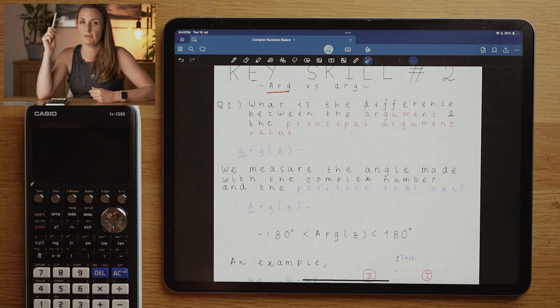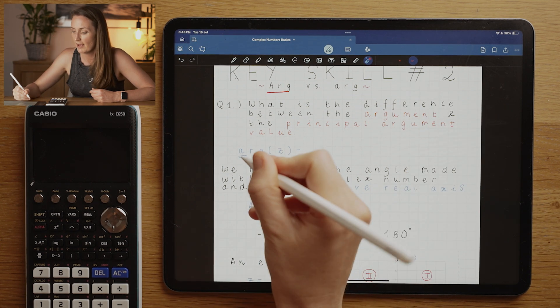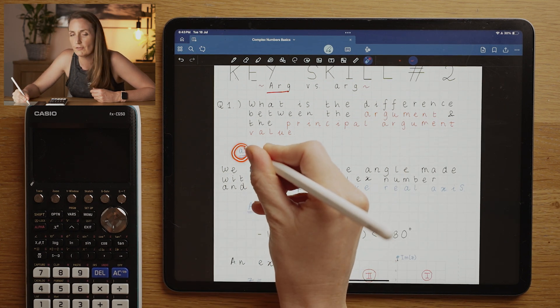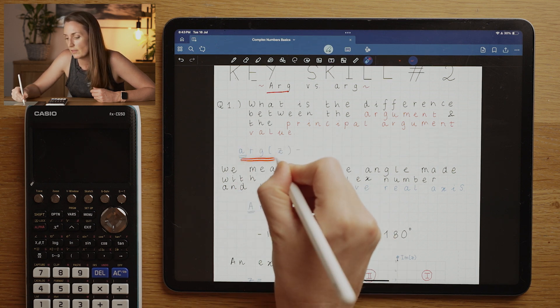I'll introduce you to a definition of arg versus Arg, or argument versus principle argument. Now you have to be paying really close attention to this. If they ask you for the arg of z with a small a, they're looking for the angle.